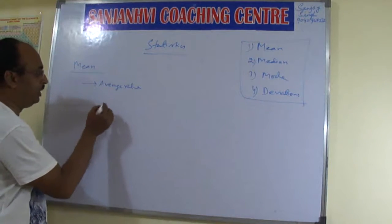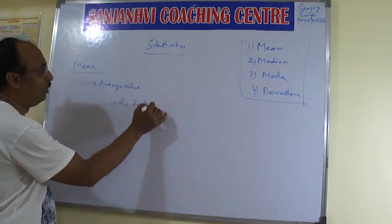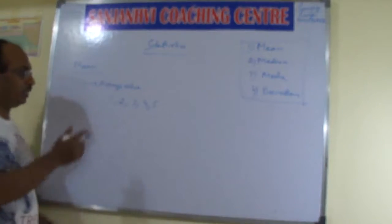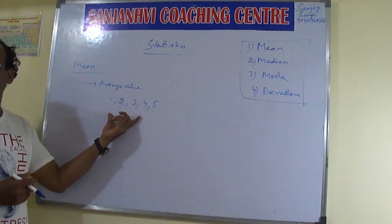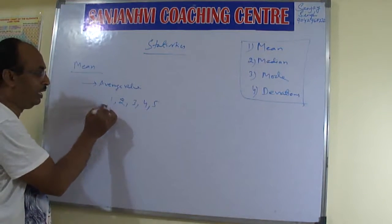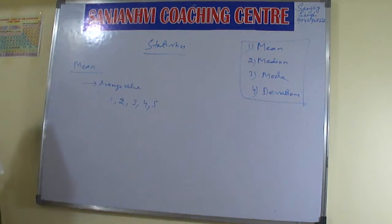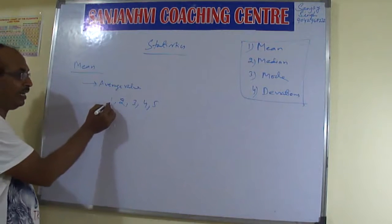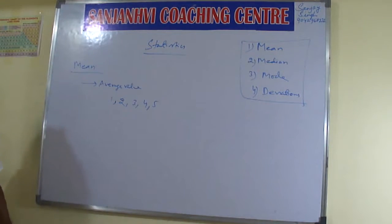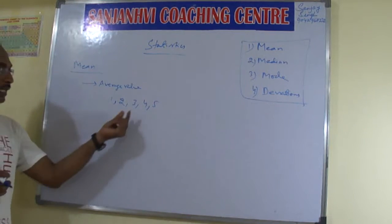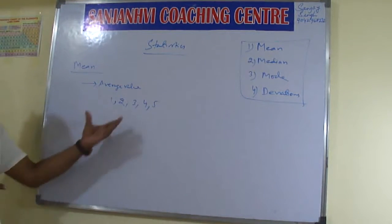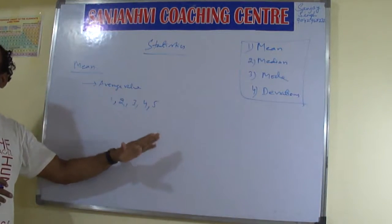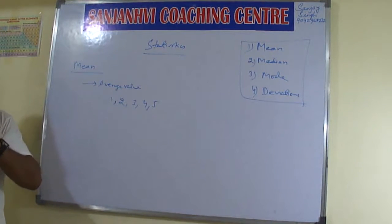Suppose you are having five data with you — you are having 1, 2, 3, 4, 5. So you are having five observations. So you observe somewhere. Suppose you want to find out how many people study mathematics. In one area you found only one person studying mathematics, in another area two persons, in another area three persons. Like this you search in five areas — you went and surveyed.